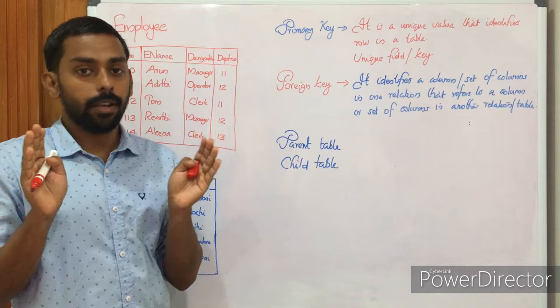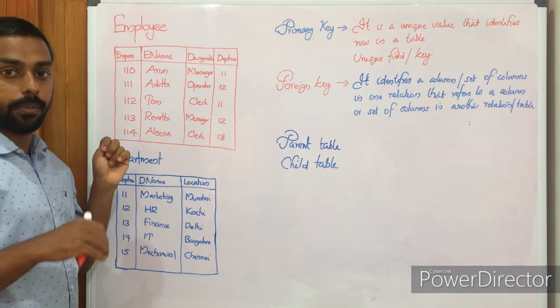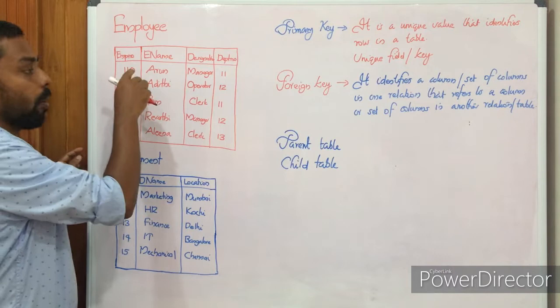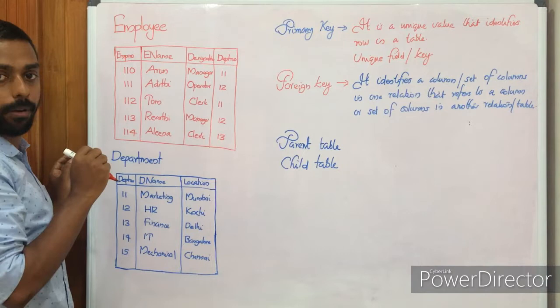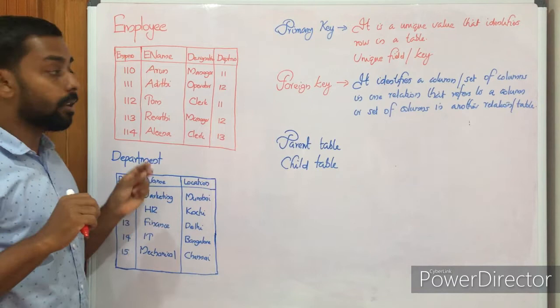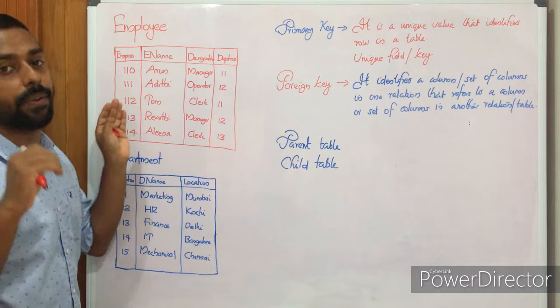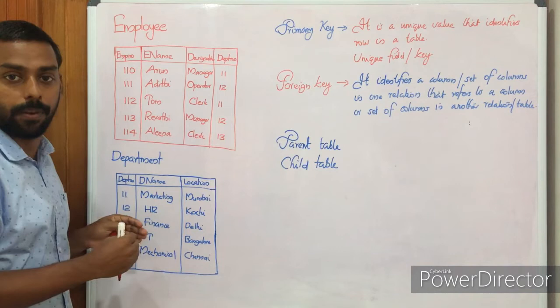That is why, just at the time of identifying a student, we add a roll number, because there may be duplicate names, duplicate marks, or duplicate values in any other field. So there must be a distinct, unique field in every table to identify the data in the table. That is what record uniqueness is — in each table we must have a column that identifies rows uniquely, and that field is called the key field.